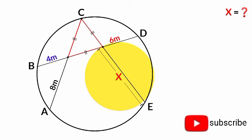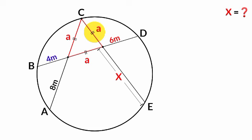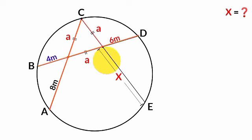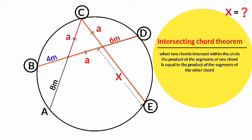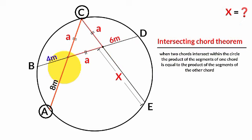How can we solve this? Starting from this triangle, we have that this side, this, and this are congruent — let's assume their length to be 'a' each. We can see that chord AC is intersecting chord BD at this point, and chord CE is also intersecting chord BD at this point. From circle theory, there is the Intersecting Chords Theorem, which states that when two chords of a circle intersect within the circle, the product of the segments of one chord equals the product of the segments of the other chord.